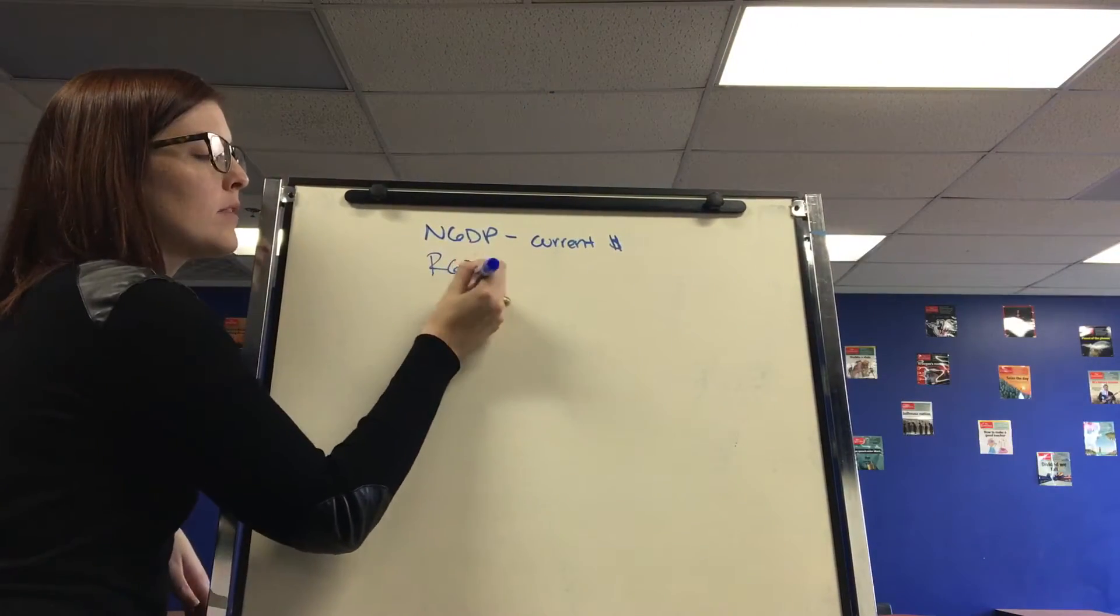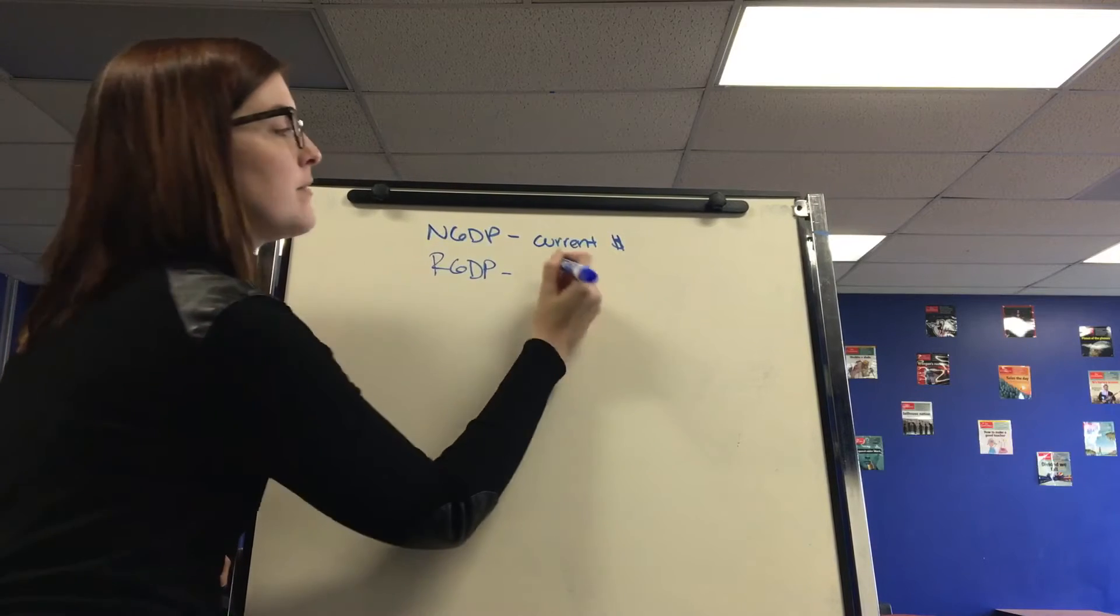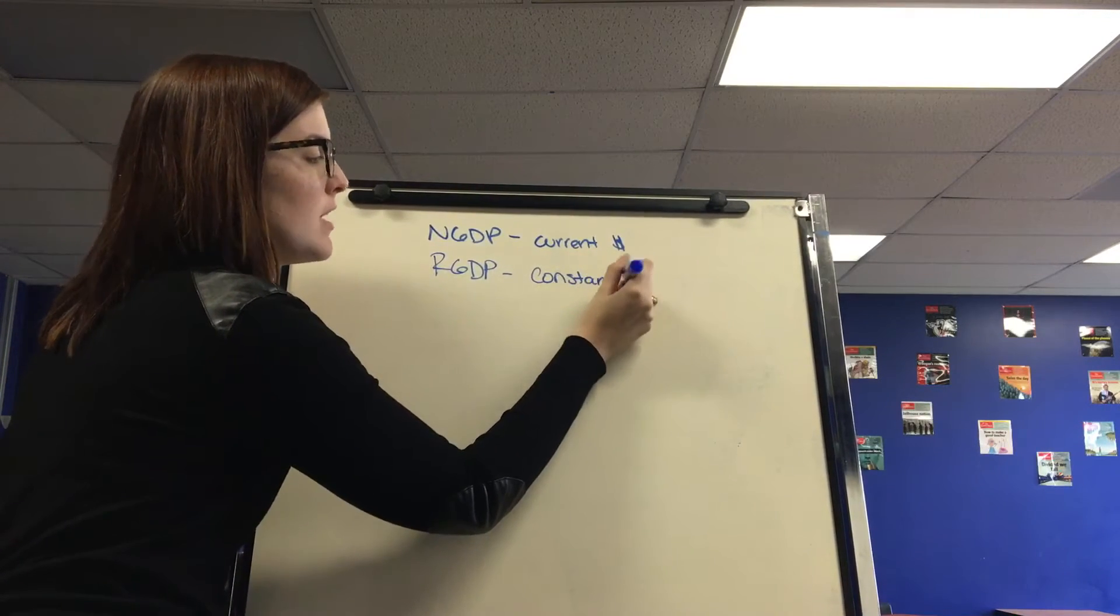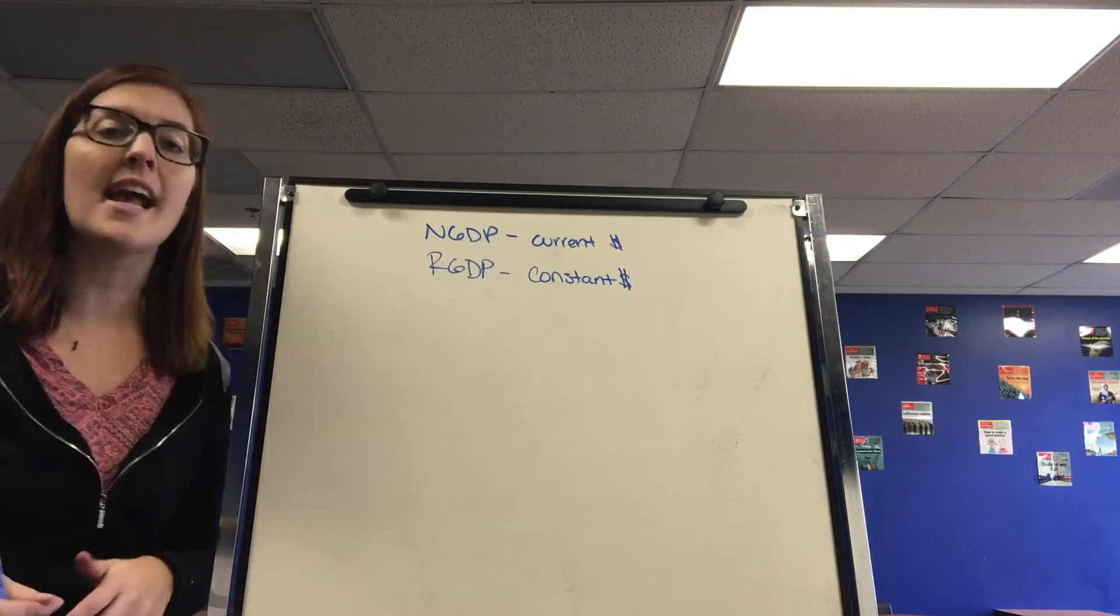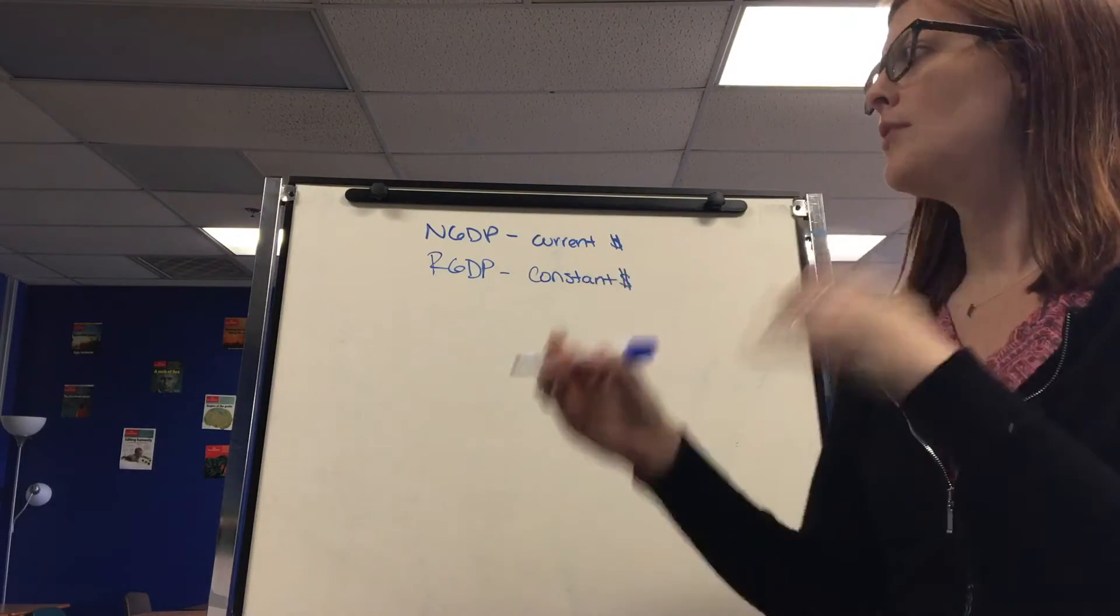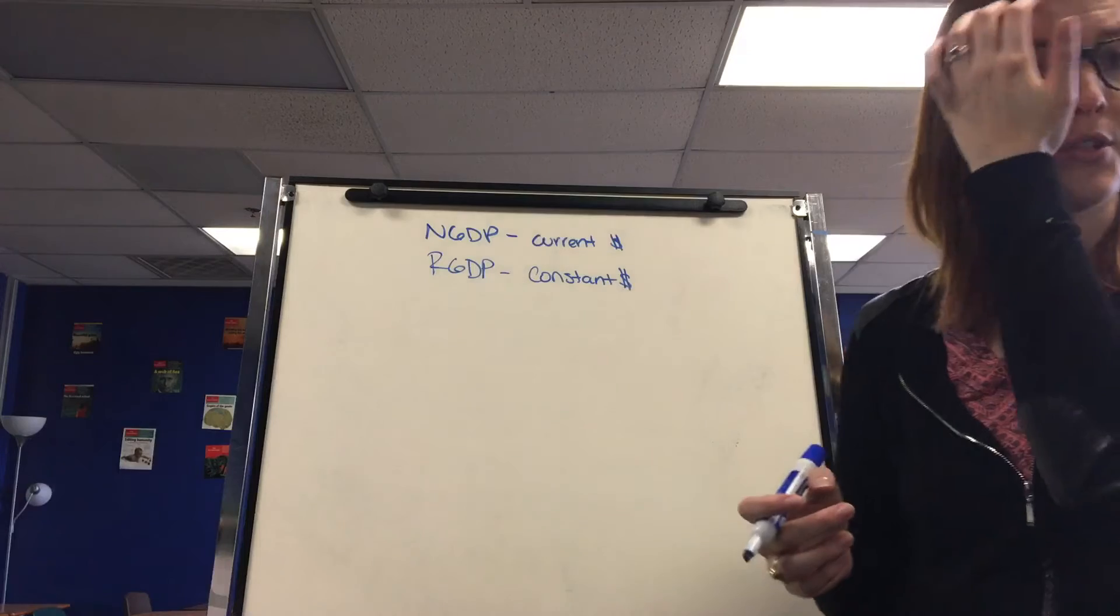Real GDP adjusts for inflation by setting a constant price. So it would just say, an iPhone is always worth $400. So that way we can actually measure by setting that constant price every single year, how many iPhones were produced.